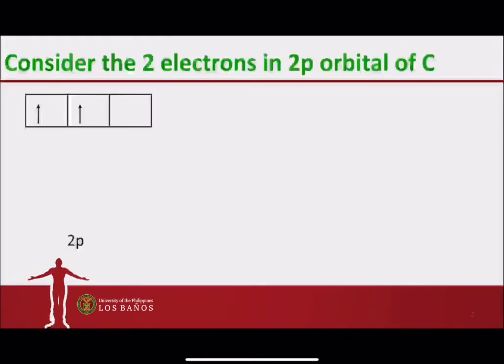Considering the two electrons in the 2p orbital of carbon, following Hund's rule, we can see that the distribution of the two electrons would be as follows.